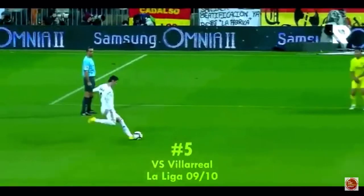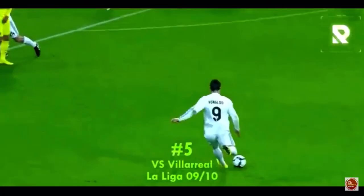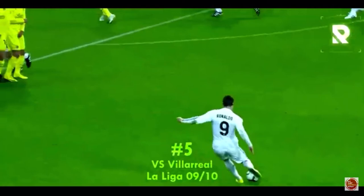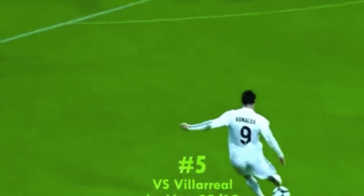Establishing a base of support when planting the left foot next to the ball helps to maintain balance. Ronaldo's centre of gravity shifts forwards in the direction of travel outside his base of support. This shift in gravity, when outside the base of support, contributes to the transfer of momentum onto the soccer ball, promoting an increase in velocity. Because the base of support is small and the centre of gravity is shifting outside it, the left arm must be lifted to counteract this shift, allowing stability throughout the kicking motion.